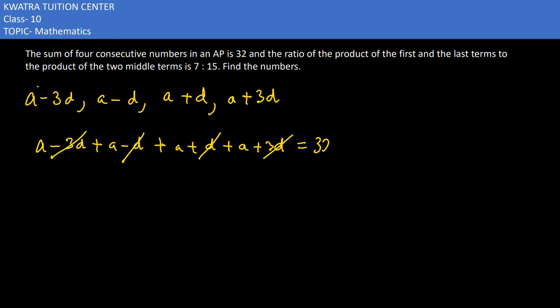And the sum is equivalent to 32. So 4a is equal to 32. So a value is equal to 32 by 4 which is 8. Okay, secondly, what do you have?